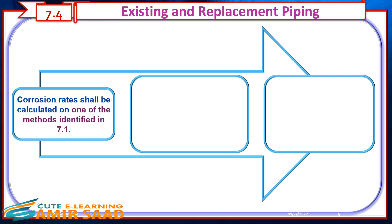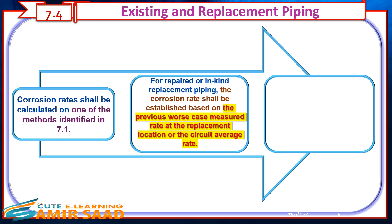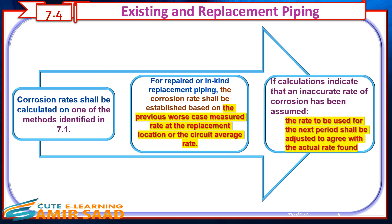Existing and Replacement Piping. Corrosion rates shall be calculated using one of the methods identified in 7.1. For repaired or in-kind replacement piping, the corrosion rate shall be established based on the previous worst-case measured rate at the replacement location or the circuit average rate. If calculations indicate that an inaccurate rate of corrosion has been assumed, the rate to be used for the next period shall be adjusted to agree with the actual rate found.